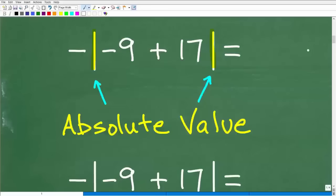And this is different than parentheses. So it's not like negative parentheses, negative 9 plus 17 parentheses like that or brackets. These symbols mean a lot in mathematics. In other words, they're very specific. So you don't want to confuse parentheses with absolute value. And this is important. Really make sure you understand this.